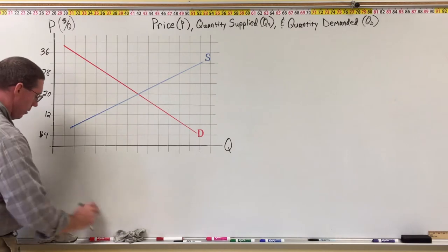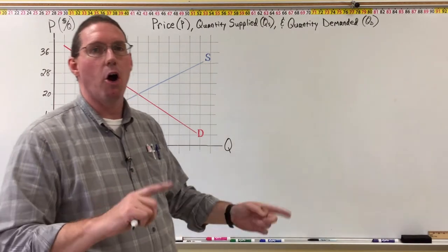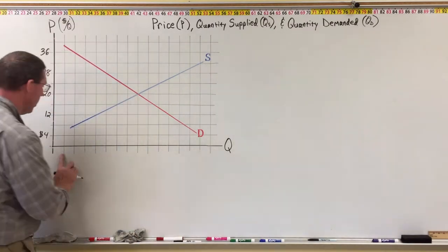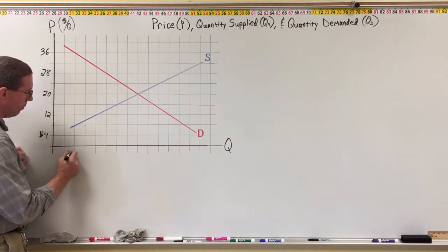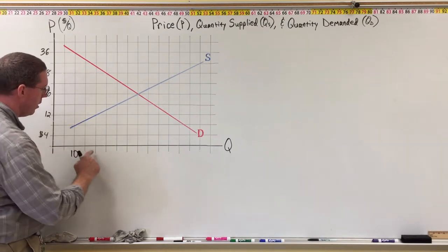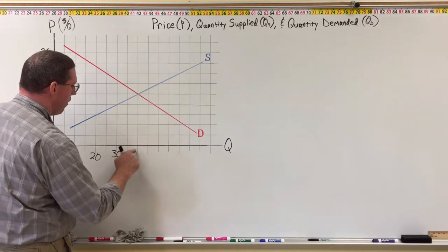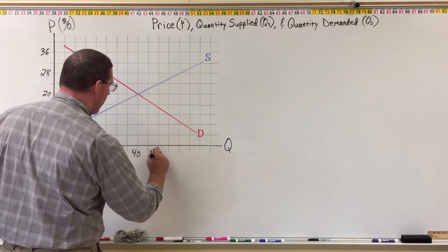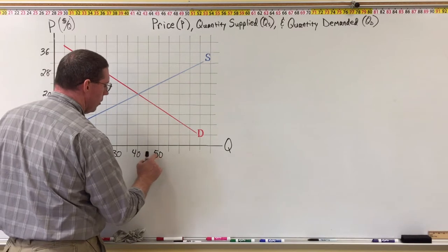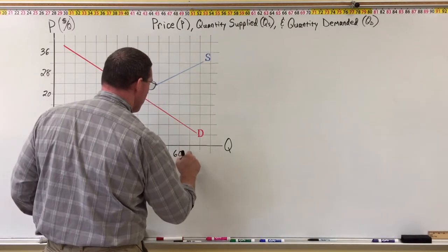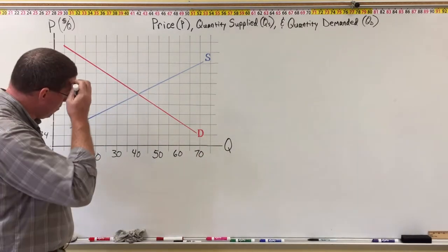On the horizontal axis, we're going to mark each grid line as a certain quantity — how many units are being purchased. Each grid line represents 5 units, so going across we have 5, 10, 15, 20, 25, 30, 35, 40, 45, 50, 55, 60, 65, 70, and 75.